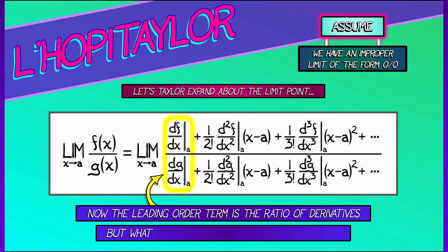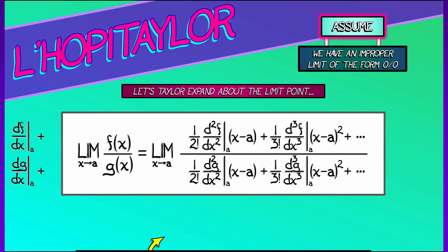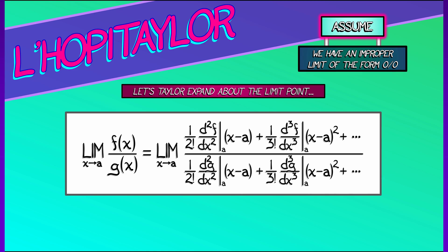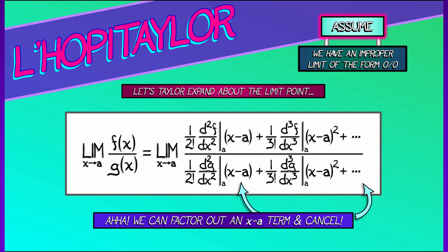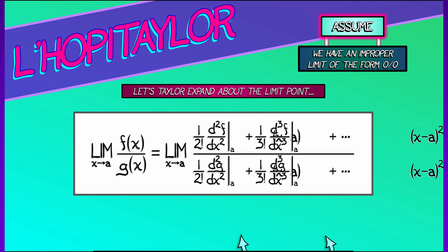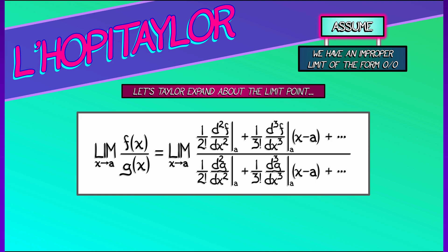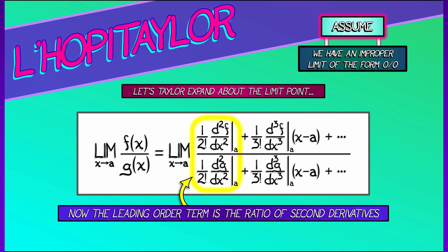Oh, but wait. What happens if both of these derivatives are 0? That's the case where L'Hopital's rule does not work the first time. So let's keep going. Get rid of those two terms. What do we have? Aha! Now we can factor out an additional (x - a) term. Cancel from the numerator and the denominator. What do we have left? The leading order terms are the second derivatives evaluated at a. And so we get the ratio of the second derivatives.